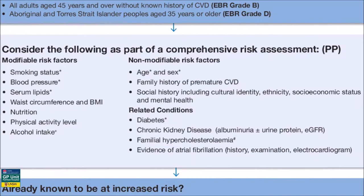These are the risk factors that we identified before — the things we need to collect in the history to get a comprehensive assessment of the risk. The factors with asterisks — smoking, blood pressure, serum lipids, age, sex, and diagnosis of diabetes along with Aboriginal and Torres Strait Islander status — constitute the minimum data set we need to use the risk calculator.